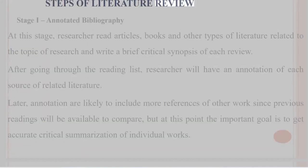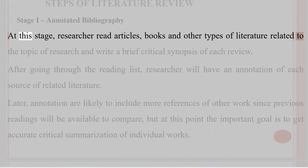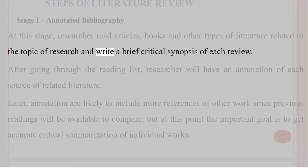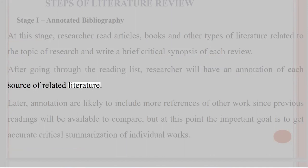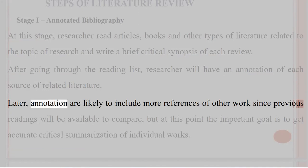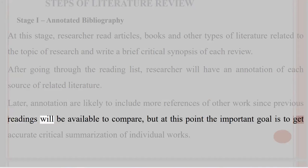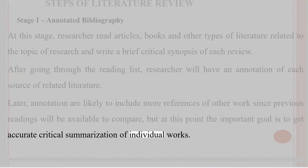Steps of literature review. Stage 1: Annotated Bibliography. At this stage, the researcher reads articles, books, and other types of literature related to the topic of research and writes a brief critical synopsis of each review. After going through the reading list, the researcher will have an annotation of each source of related literature. Later, annotations are likely to include more references of other works, but the important goal at this point is to get accurate critical summarization of individual works.